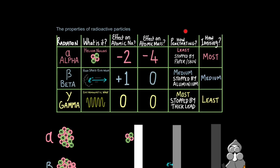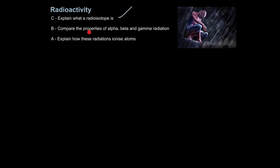It's very important you remember the penetrating ability of these ionizing radiations because you will have to apply this in quite unfamiliar contexts in your exams. This table is well worth jotting down and remembering. So that's how you compare the properties of alpha, beta and gamma radiation.